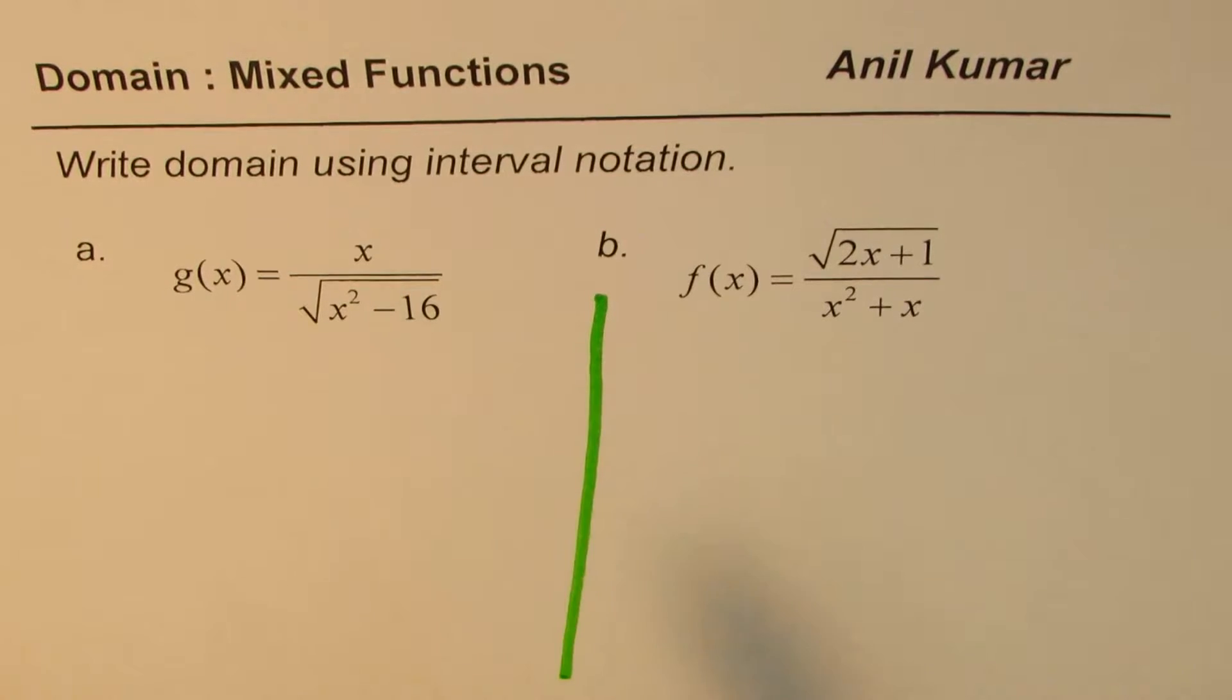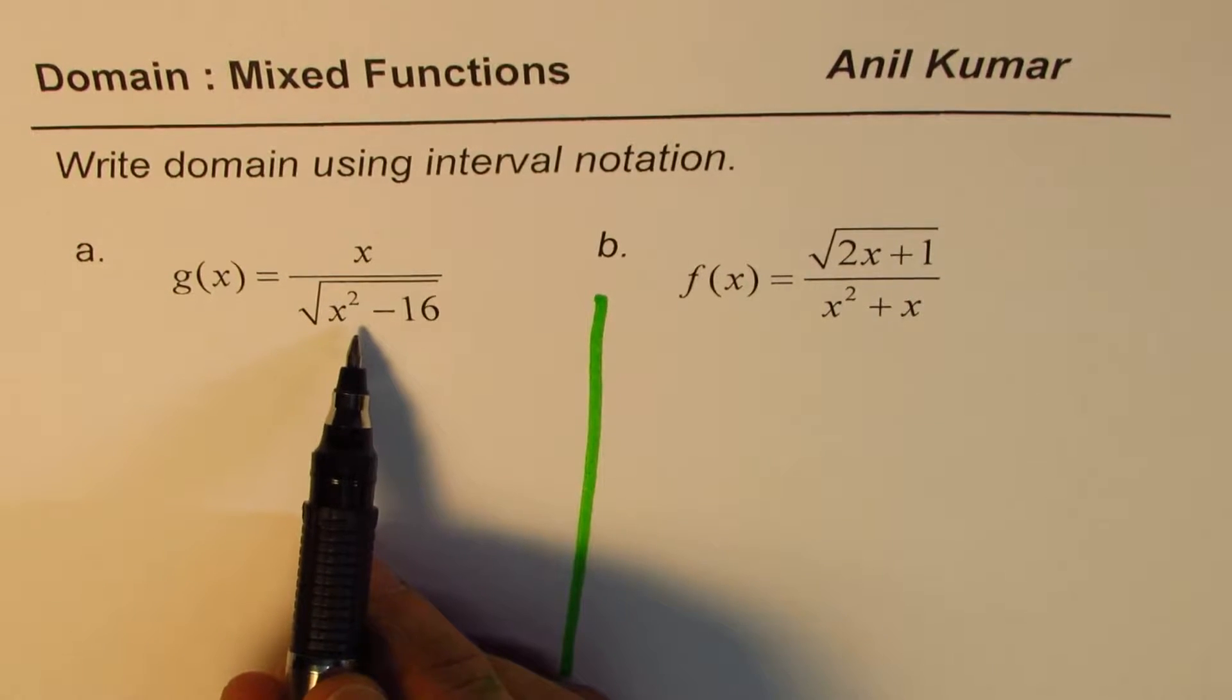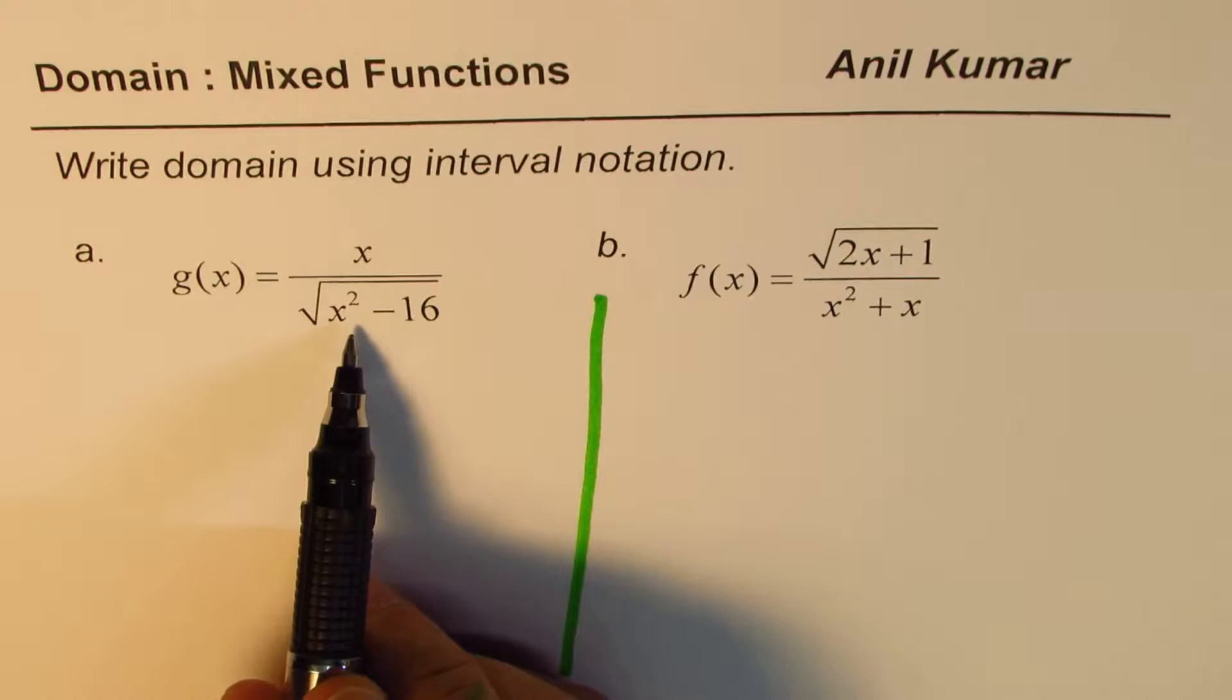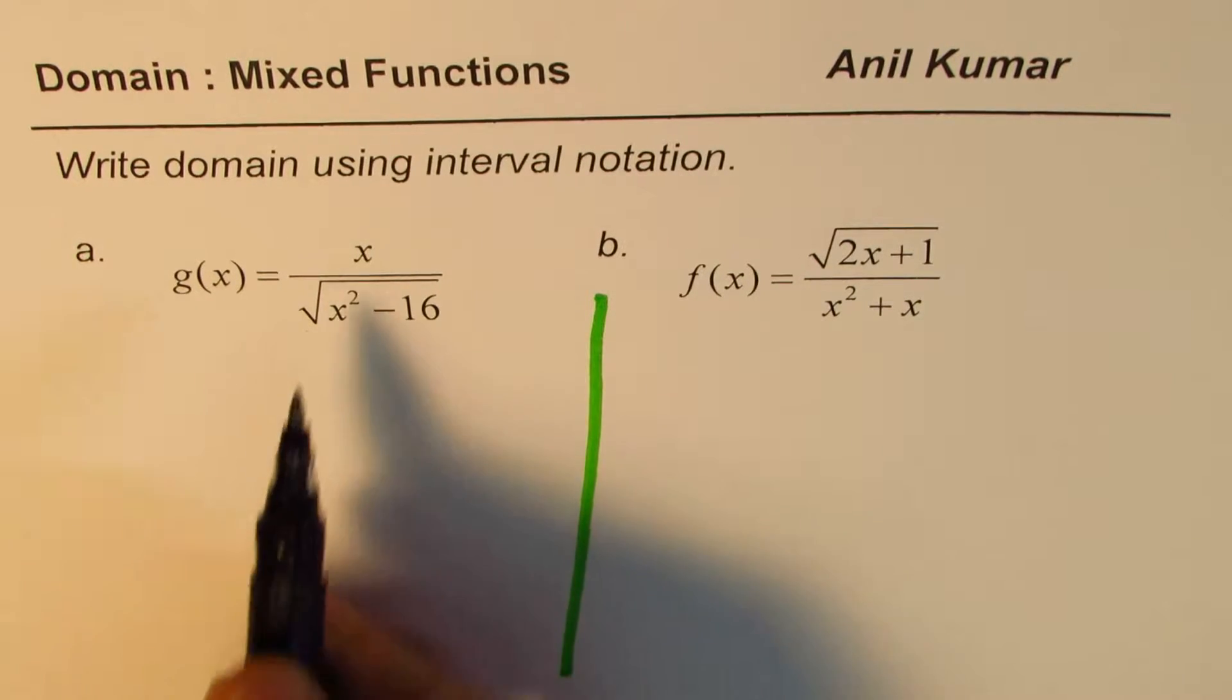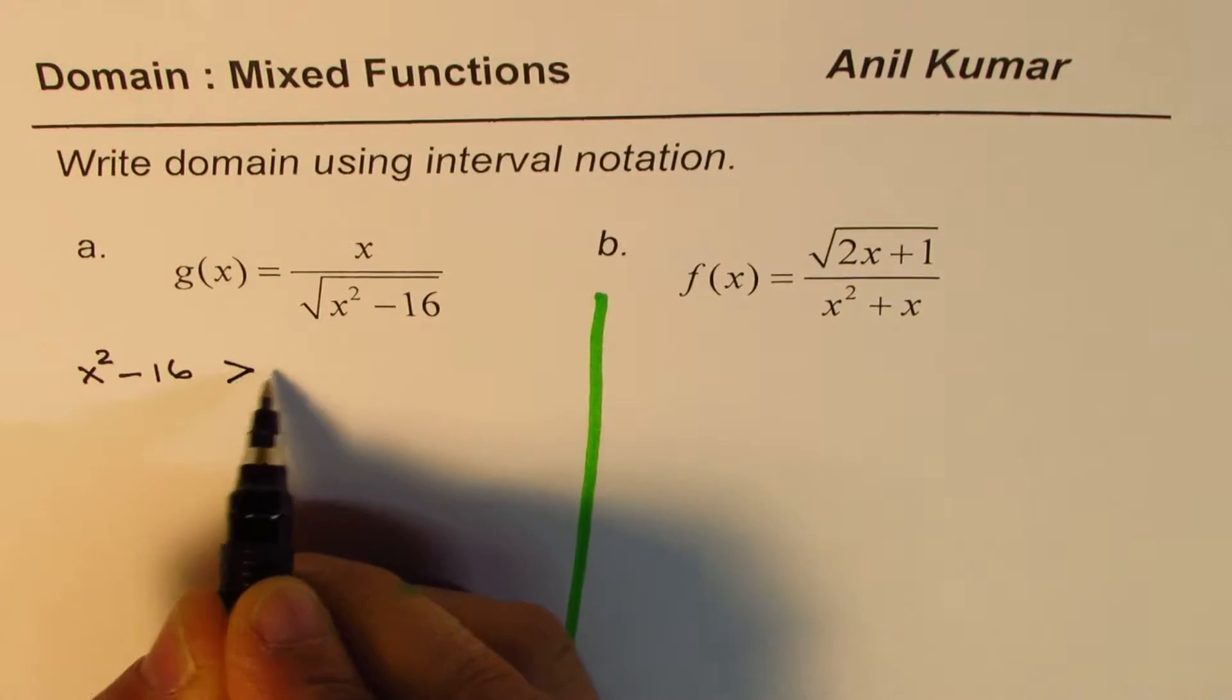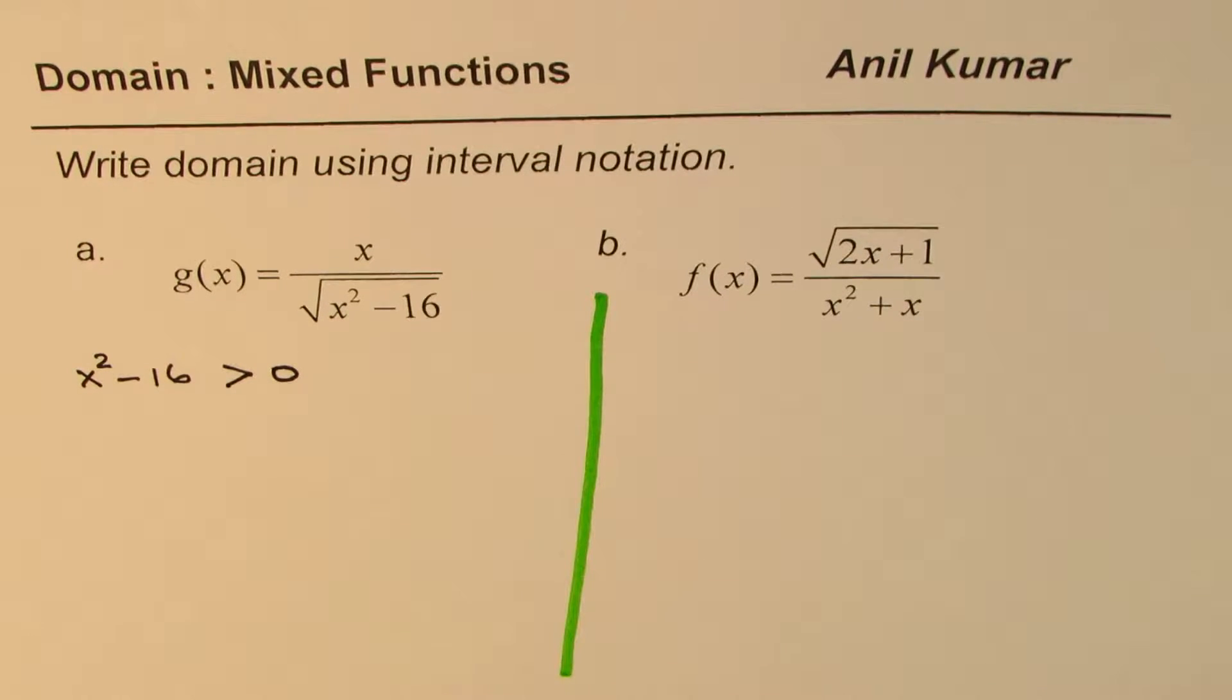For the radicand we know it should be non-negative, correct? So combining the two, that means denominator cannot be 0 and the radicand should be non-negative, we are actually solving for x squared minus 16 should be greater than 0. So that helps us to find the domain, that's the key.